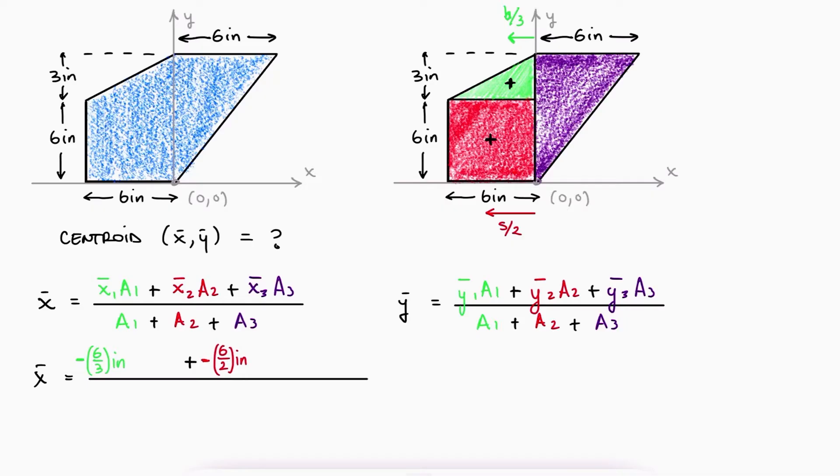Both of these distances are negative. The distance to the centroid of the purple figure would be a positive distance equal to one-third of the base. Notice that I use the same datum for all three.